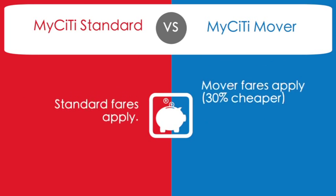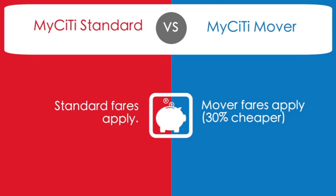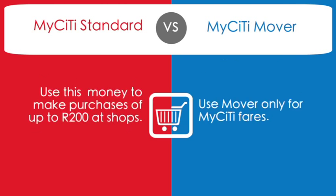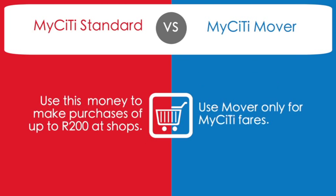With the MyCity standard, standard fares will apply. With the mover, mover fares apply and they're 30% cheaper. If you have the MyCity standard option, you can use this money to make purchases of up to 200 Rand at shops. With the mover package, you use the mover only for MyCity fares.